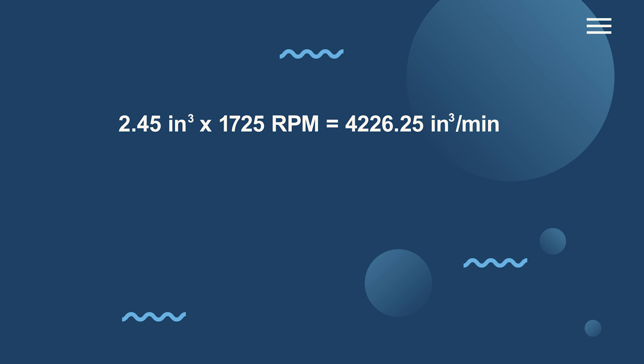Typically, speed in this context is measured in revolutions per minute, or RPMs. As an example, let's say we have a pump with a displacement of 2.45 cubic inches per revolution, and it's running at a speed of 1,725 revolutions per minute. The flow rate would be 2.45 times 1,725, which equals 4,226.25 cubic inches per minute of flow.